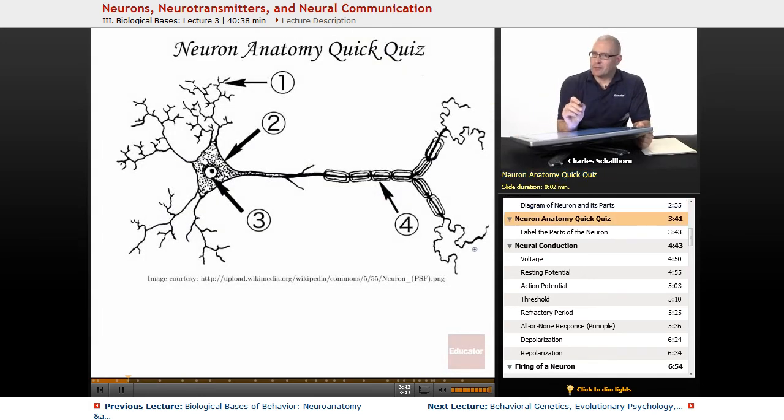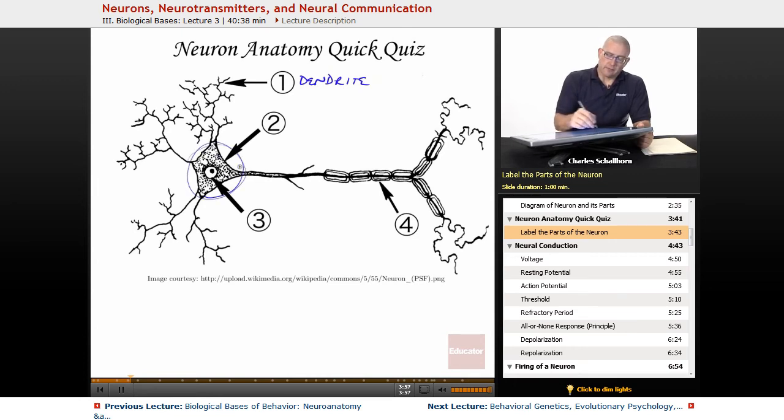So, quick quiz. How much were you paying attention? Number one here, these receiving neurons. What is that going to be called? Dendrite. This whole thing right here, the whole thing, that's going to be the soma. Remember, soma is the Greek word for body. So, the soma is the body of the cell. This tiny little thing in here, we don't need to worry about it, but it is a nucleus.